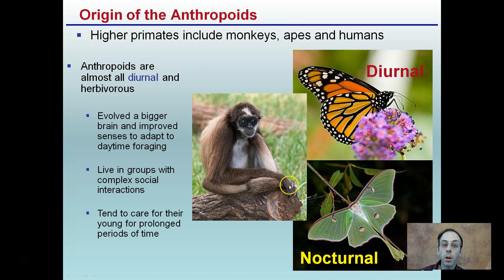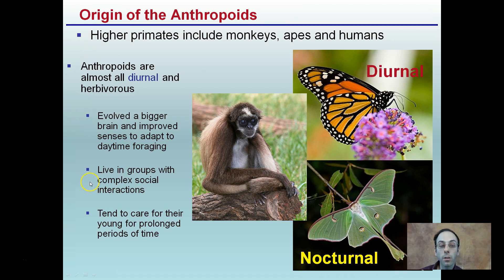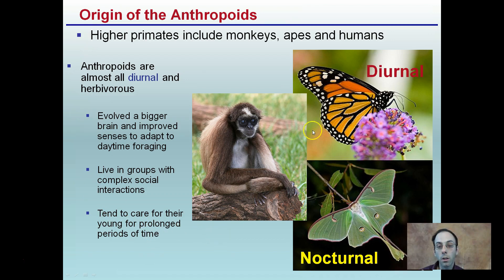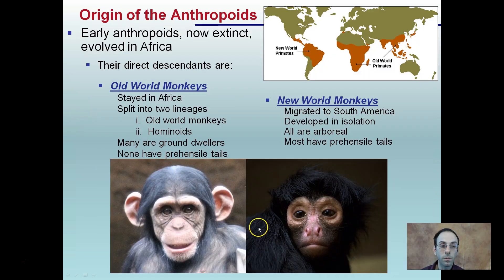Higher primates also involve bigger brains, improved senses, and are adapted for daytime foraging. They live in groups with complex social interactions and tend to care for their young for prolonged periods of time. These are all examples of the diurnal type of monkey, versus the predecessors which were mostly nocturnal.